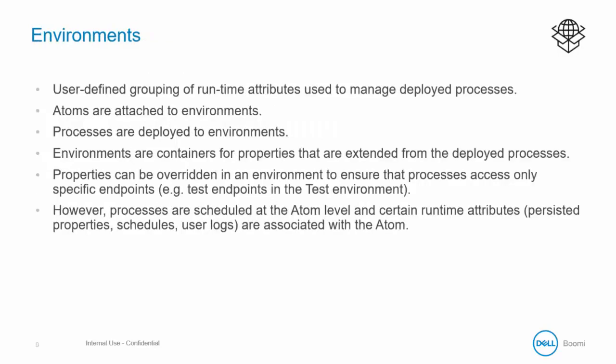We deploy the process to an environment, so let's take a look at environments. The definition for an environment is a user-defined grouping of runtime attributes used to manage deployed processes. You can think of an environment as a container — it contains the runtime (the atom, molecule, or cloud) and also the processes deployed to it. The environment itself does not do anything except contain the runtime, the processes, and a few configurations such as roles and environment extensions. The runtime is where the schedule is set and other runtime attributes are associated.